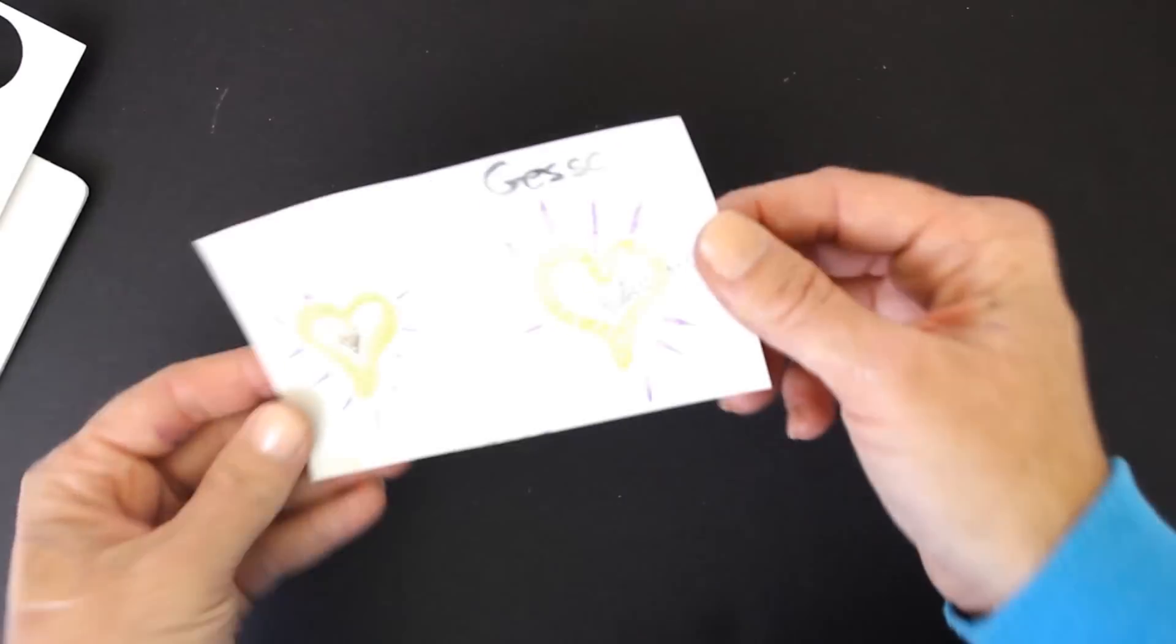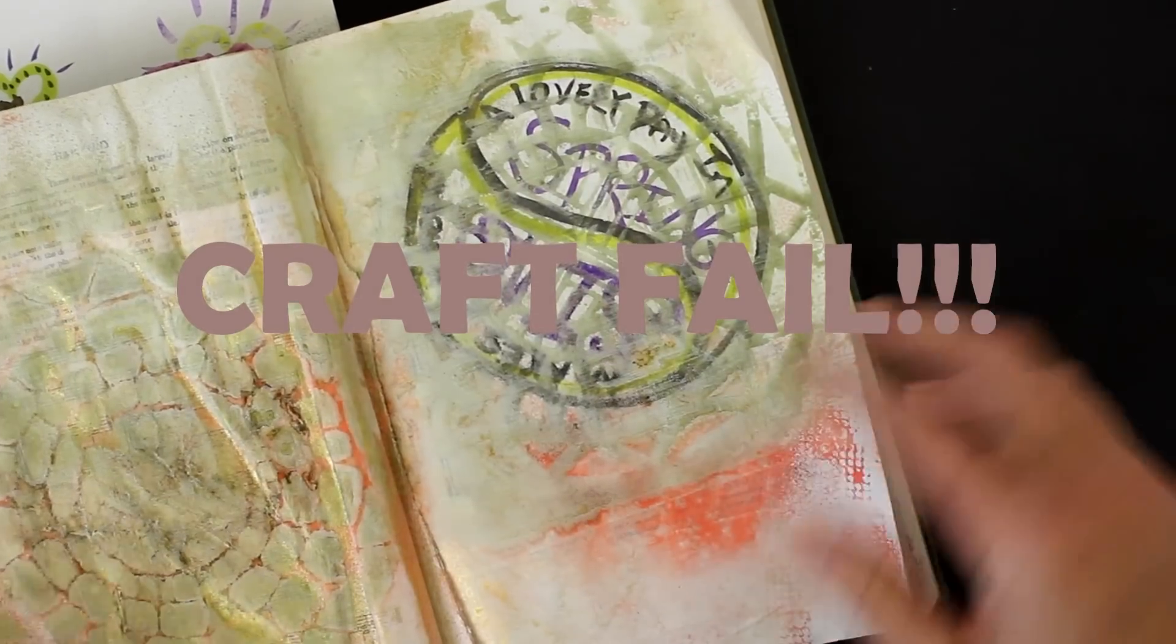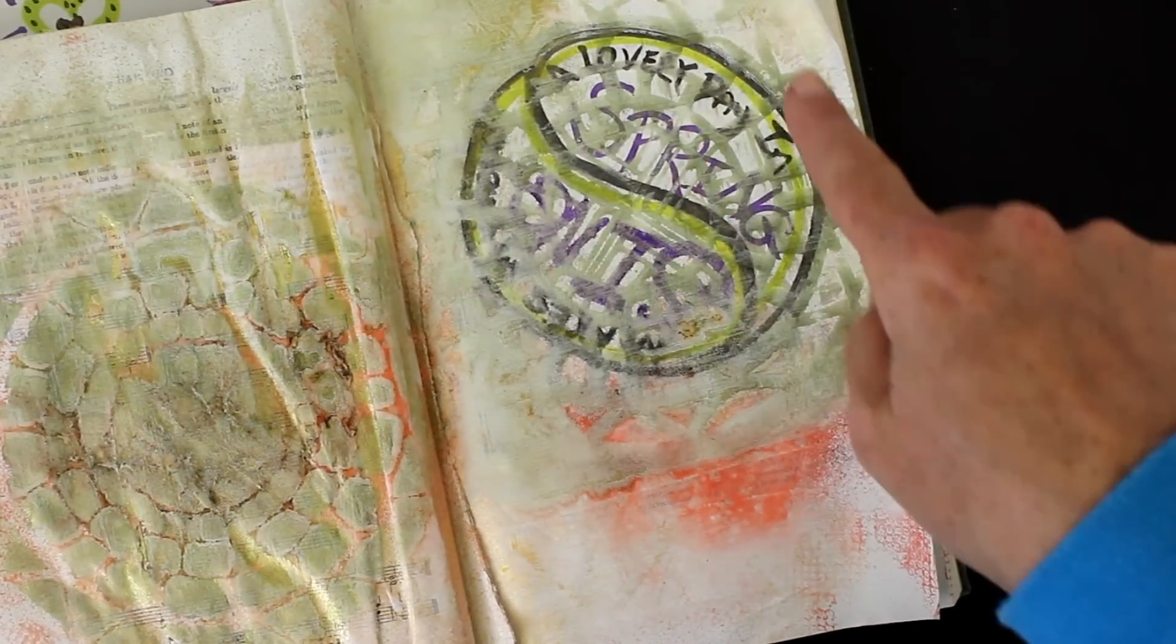I also tried it on a coated surface. Here I should show you the fail first—why I failed. So I was working in this journal page and I was drawing with the Kuretake Zigs.